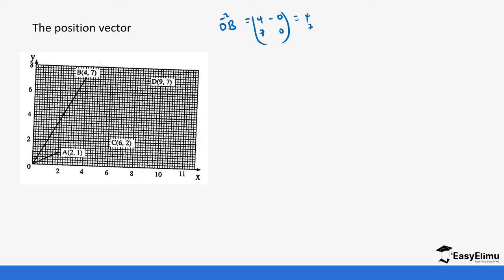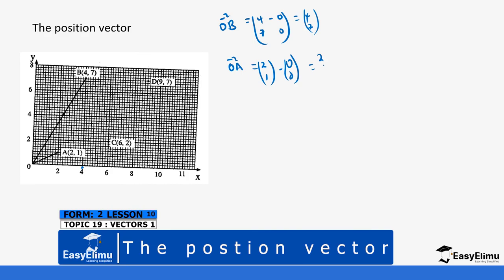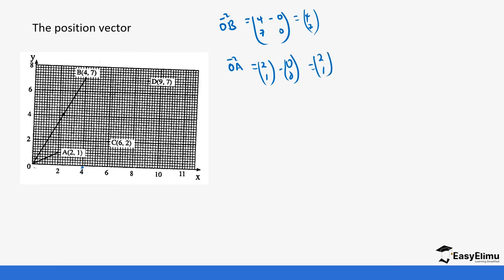So we are moving 4 steps on the x-axis and 7 steps on the y-axis, as you can see on the Cartesian plane. So our final answer becomes (4,7). If you look at OA, it would be (2,1) — you subtract (0,0) which gives us (2,1). So for OA, we are moving two steps on the x-axis and one step on the y-axis, both positive. OB is usually given the representation of small letter b to represent this vector, and then we use small letter a to represent vector OA.